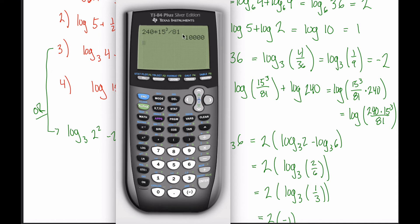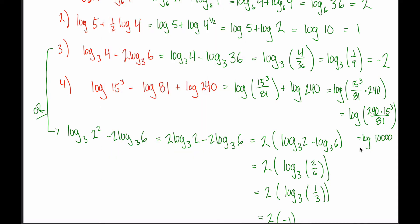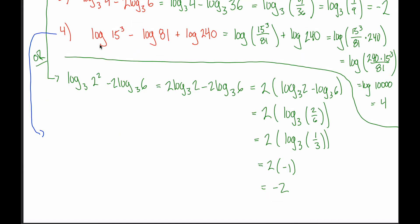You could argue that if we're already using a calculator to simplify the argument, why not just use it to find the log directly? That's fine, but what I'm trying to show is how to do this without a calculator. The log of 10,000 — there's an implied base 10 — asks what power you raise 10 to in order to get 10,000. Powers of 10 are easy: just count the zeros. There are four zeros in 10,000, so 10 to the fourth power equals 10,000. Therefore log of 10,000 equals 4.